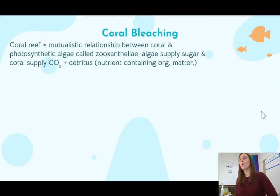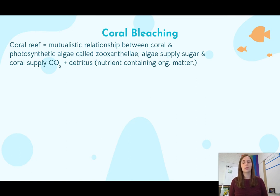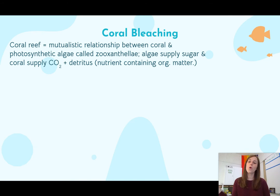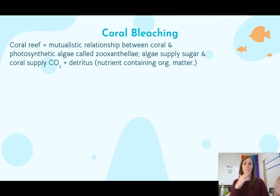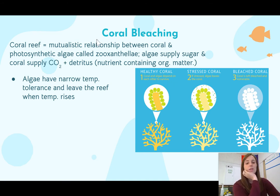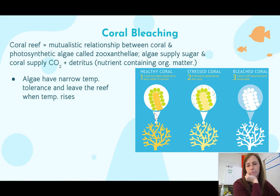Coral bleaching: a coral reef is actually a mutualistic relationship between coral and a photosynthetic algae called zooxanthellae. Coral is the actual animal, and the algae lives inside it. The algae performs photosynthesis and supplies sugar to the coral, while the coral supplies carbon dioxide and nutrients, so they work together in this mutualistic relationship. A healthy coral reef will have color because it has algae — the little polyps are the animals and the green part is the algae living within them.